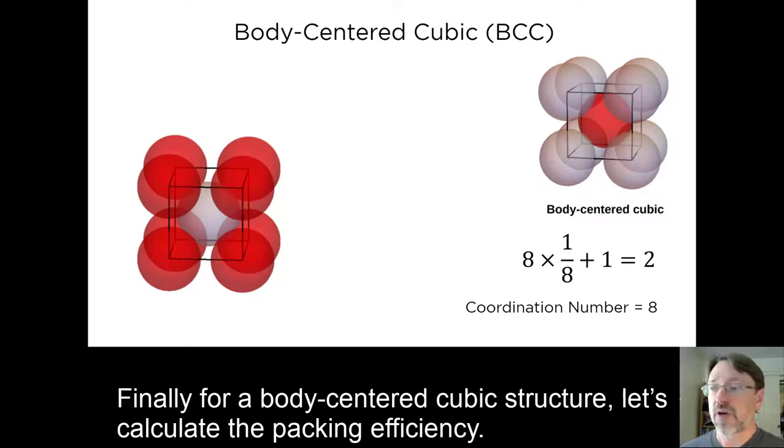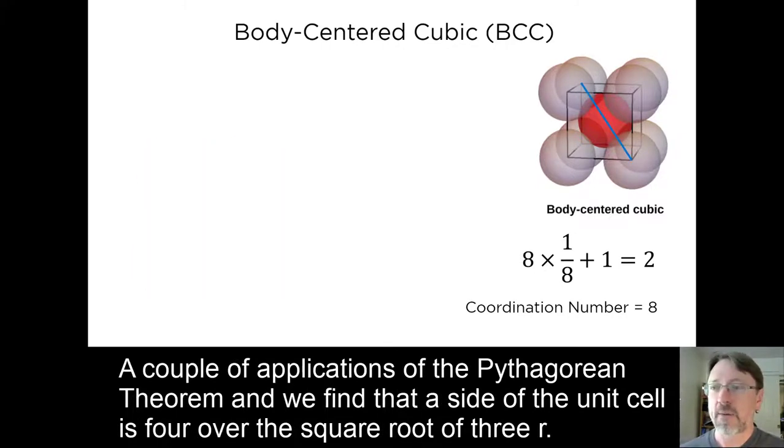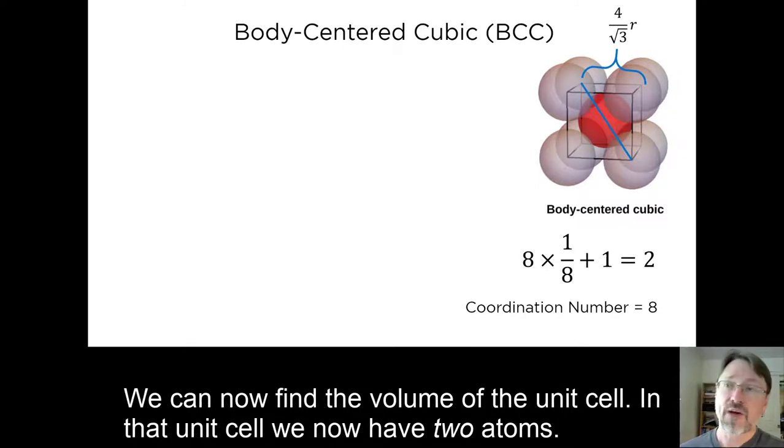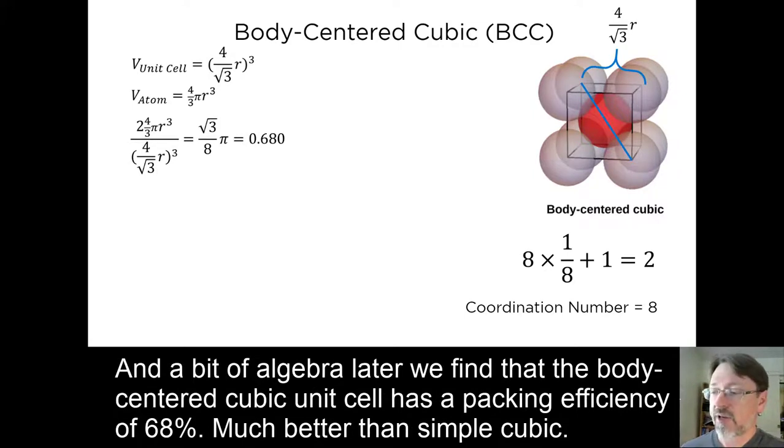Finally, for a body-centered cubic structure, let's calculate the packing efficiency. To do that, we need to recognize that the body diagonal is 4 atomic radii. A couple of applications of the Pythagorean theorem, and we find that the side of a unit cell is 4 over the square root of 3r. We can now find the volume of the unit cell. And in that unit cell, we now have two atoms. And a bit of algebra later, we find that the body-centered cubic unit cell has a packing efficiency of 68%. Much better than simple cubic.